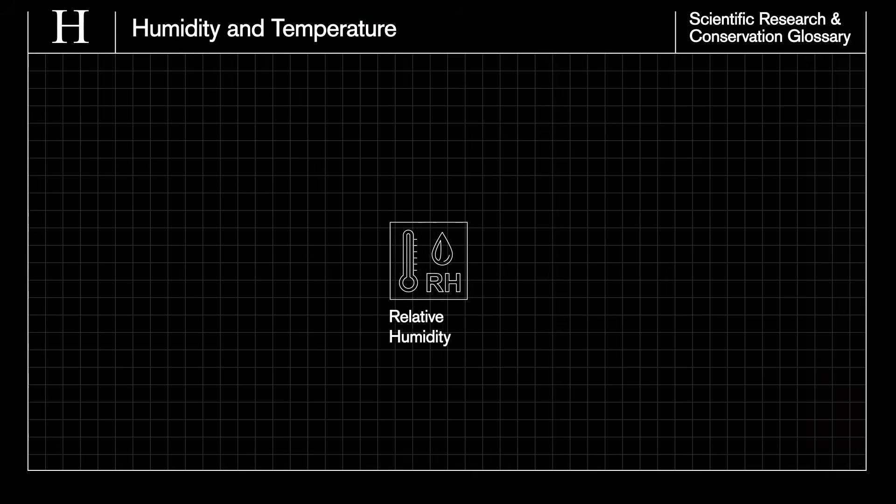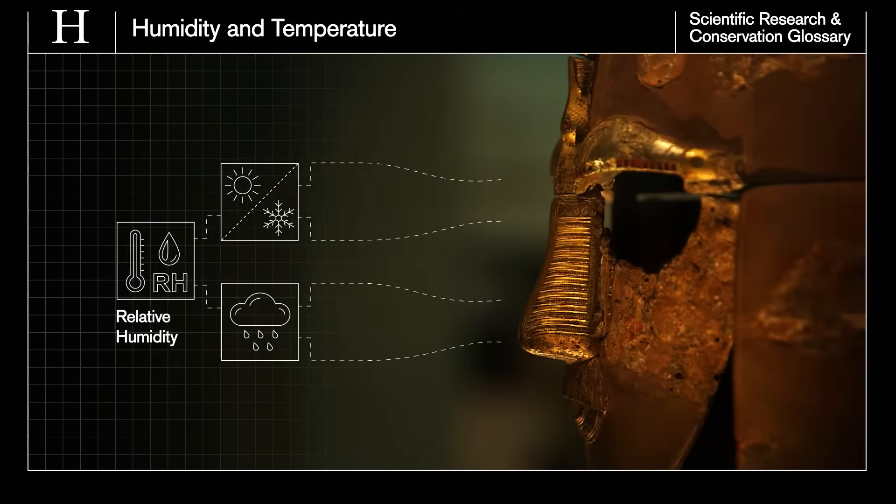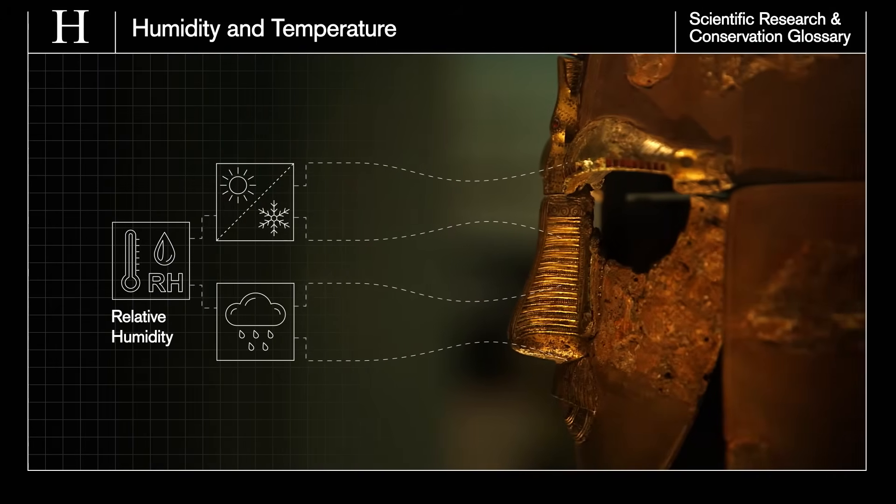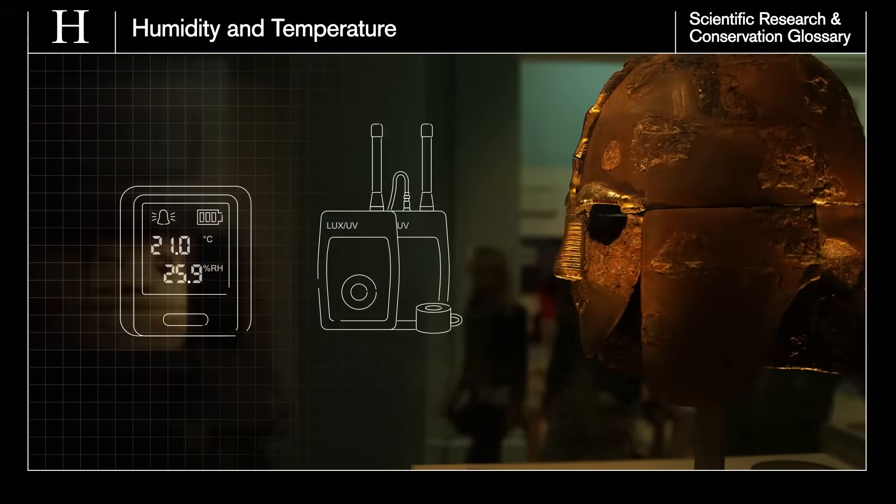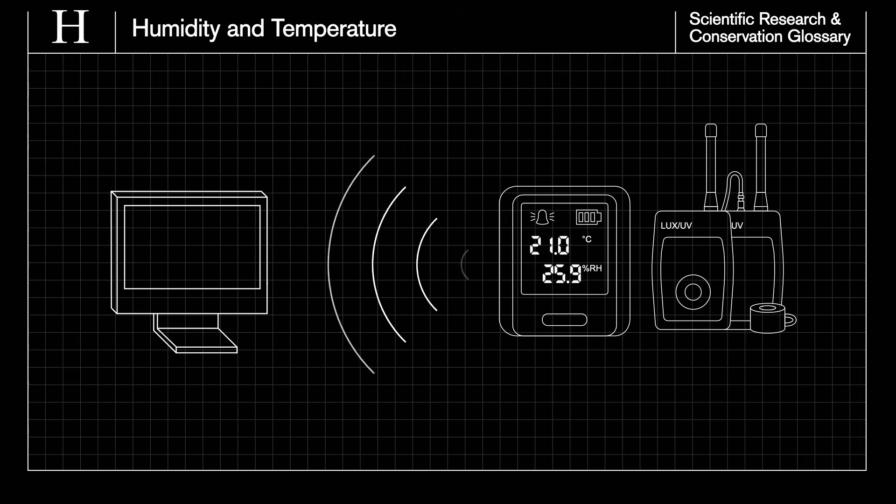Incorrect humidity and temperature impact the deterioration of objects and the museum has various types of equipment to control these. Monitoring devices are placed throughout the museum and their readings are transmitted to a control centre where staff are alerted to any threats.